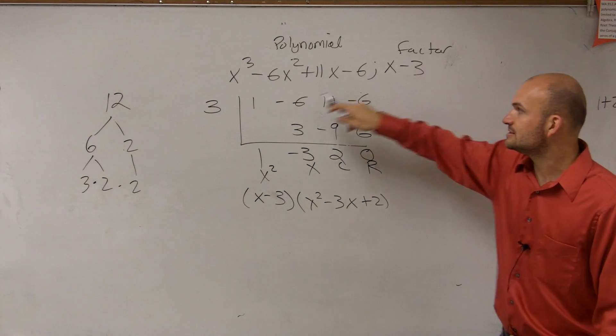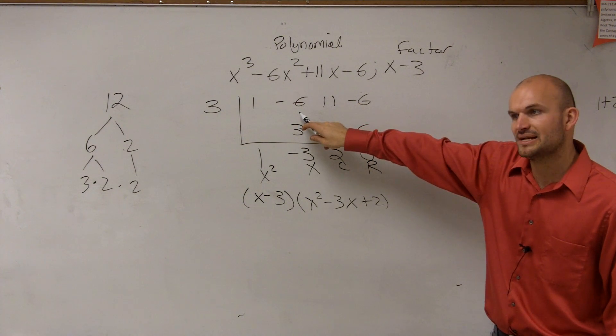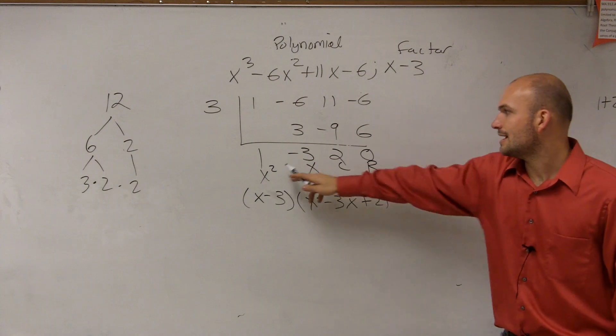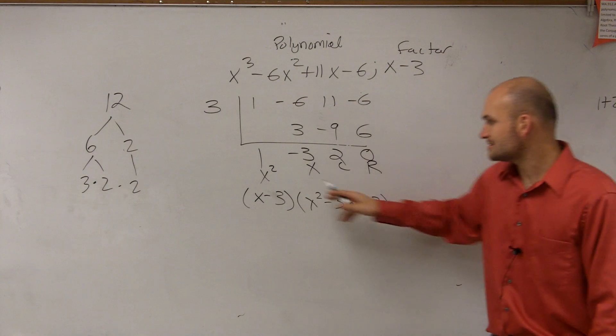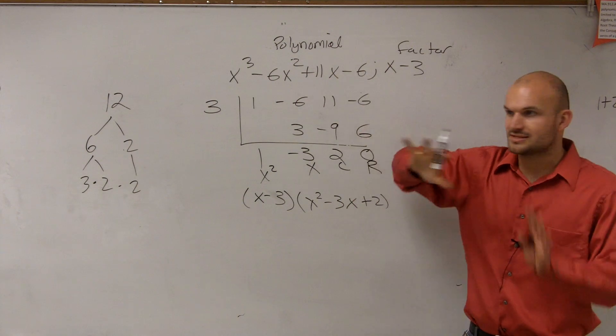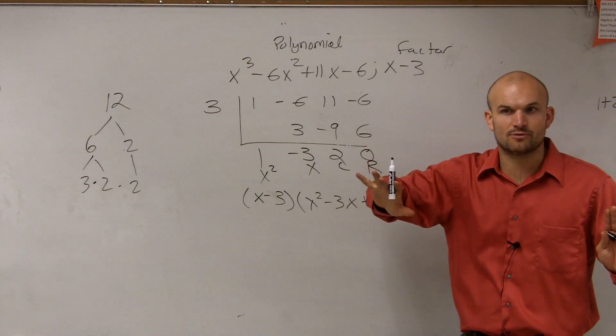x minus 3 divides into this polynomial. How many times? x² - 3x + 2 times. So this times this gives you that. Same thing with numbers, now just with polynomials.